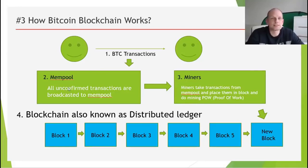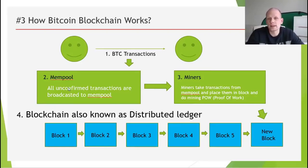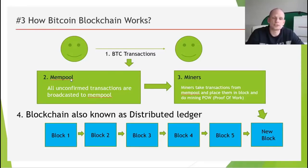When you make a Bitcoin payment, it doesn't go through straight away. For example, John sends Bitcoin to me — I don't receive it immediately. As mentioned in my previous video, before a Bitcoin transaction goes through, it takes 10 to 90 minutes. During that time, after the transaction is executed, it gets placed into the mempool. All unconfirmed transactions are broadcasted to the mempool.